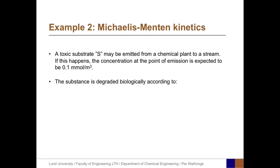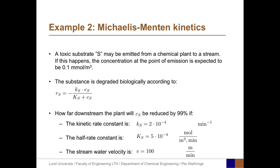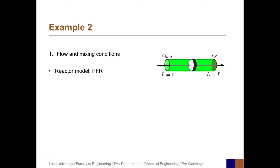Example 2 applies Michaelis-Menten kinetics. A toxic substance S is emitted from a chemical plant into a stream. The concentration at the emission point is expected to be 0.1 mmol/m³. The substance is degraded biologically according to r_S = −k_S · C_S / (K_S + C_S), where k_S is the kinetic rate constant and K_S is the half-rate constant. The flow velocity v = 100 m/min. The reactor is a PFR, and the mass balance in length coordinates is r_S·dL = v·dC_S.